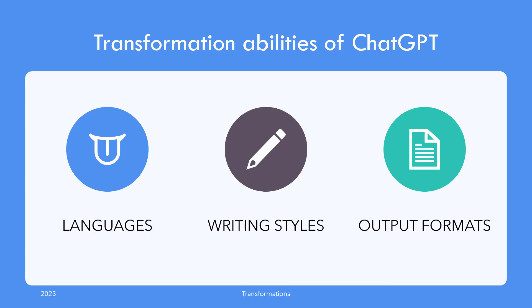JADGPT has been trained on English language literature but also Wikipedia, mathematical journals, textbooks, library stuff and much more. It understands lots of languages, writing styles, output formats and much more, and is able to transform from one to another like you can.